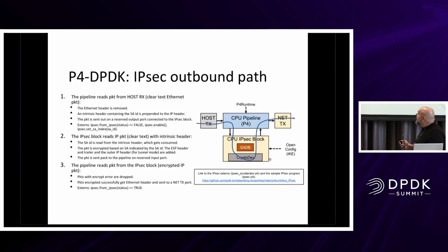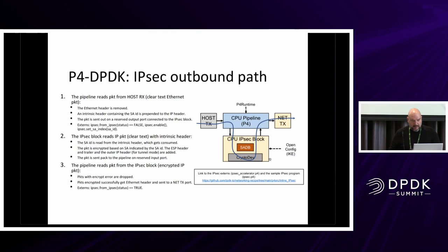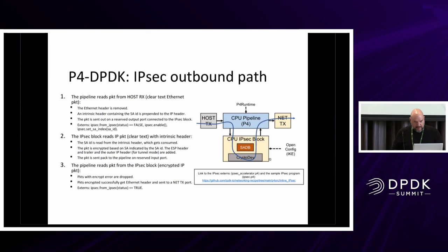For the outbound path, the diagram is reversed — the host is on one side and the network on the other. When a packet is received from the host, the Ethernet header is removed and an intrinsic header containing the SAID is added. The extensions are set to indicate the packet doesn't originate from the IPsec block, the SAID is set, and through a reserved port the packet is sent to the CPU IPsec block for outbound processing.